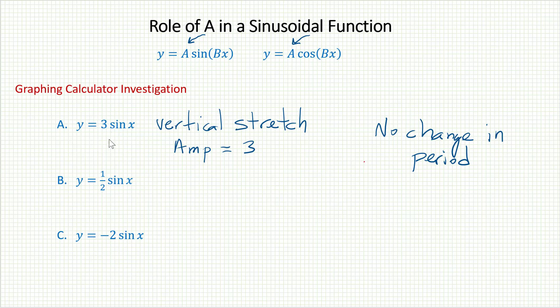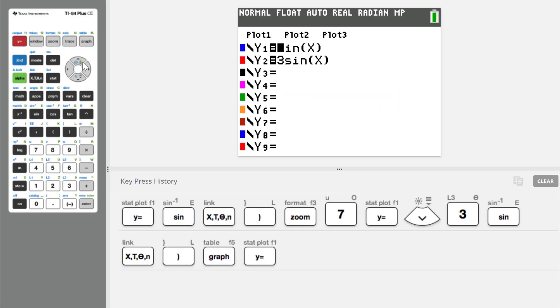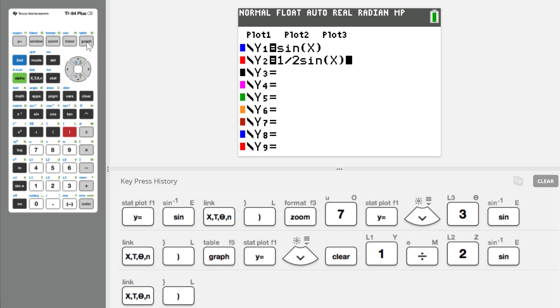So first we used a equals 3. Now let's investigate what happens if we use a small number, like 1 half. I'll go back to my y equals area, and I'll change out that second equation. I'll clear it out and type in 1 half sine x.